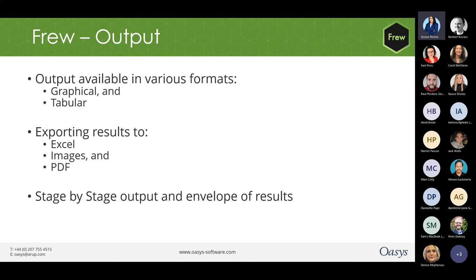You can print out the graphical outputs for one stage or for an envelope of results. For example, if there are many stages and you need to know the worst case displacement, you can print the displacement for all the stages. You can also export results to Excel, copy images, print to PDF, and use the results for further analysis.